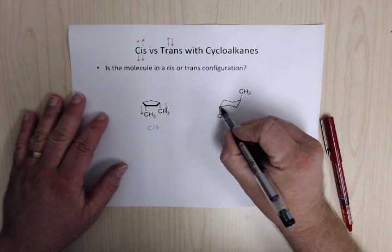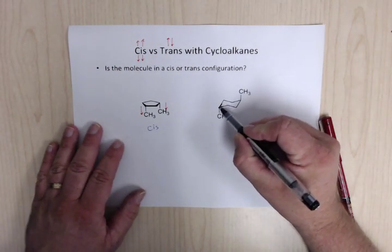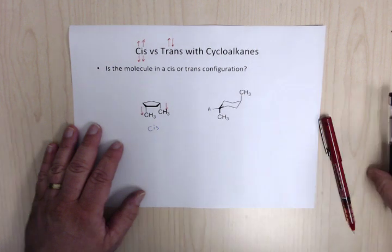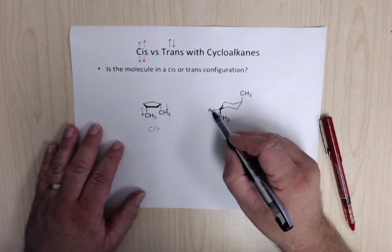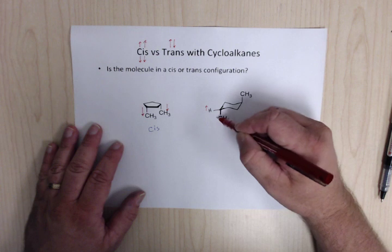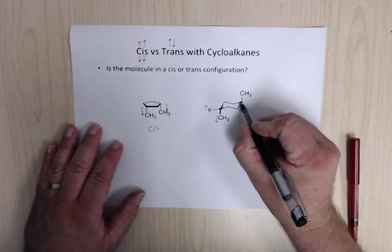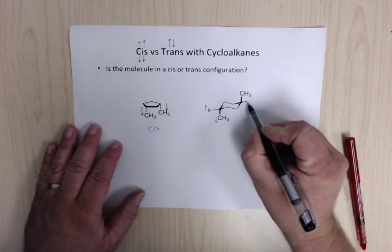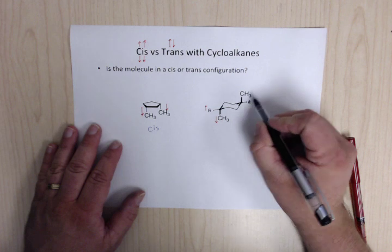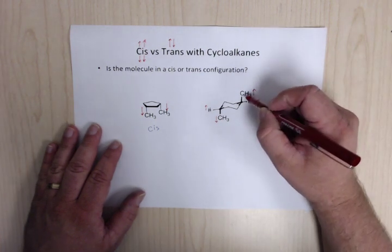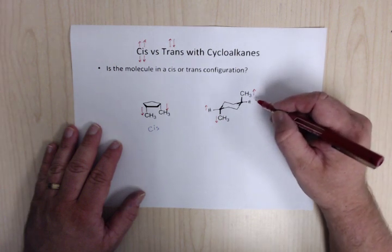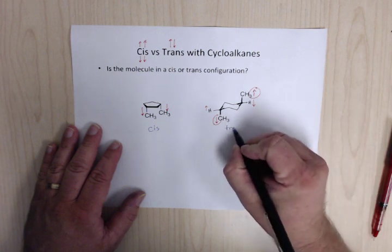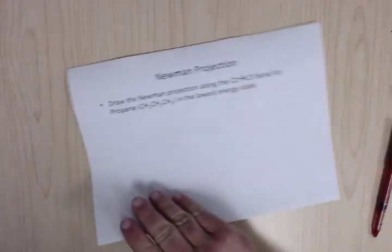For this carbon, the carbon-carbon bonds are pointing down, so the axial is down, which means there's an equatorial coming out here. Since there are only three bonds shown, there has to be a hydrogen — the hydrogen is above the methyl, so this is up and this is down. For the next carbon, the carbon-carbon bonds are pointing up, so the axial points straight up and the equatorial comes off to the side. With only three bonds shown, it's a hydrogen — the methyl is above the hydrogen, so methyl is up and hydrogen is down. One methyl is pointing up and one is pointing down, making this trans.